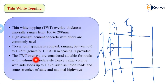The TWT overlay is considered suitable for roads with medium to moderately heavy traffic volume with axle loads up to 10.2 tons, such as urban roads and some stretches of state and national highways. This type of method is generally adopted in urban roads.